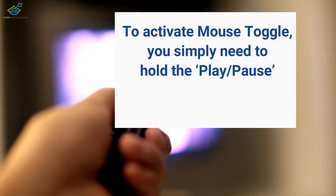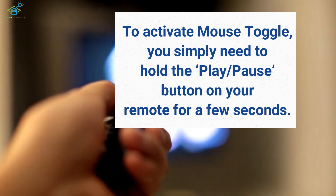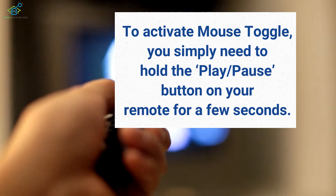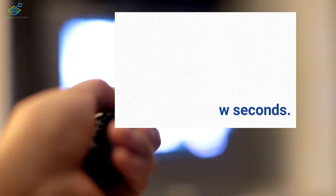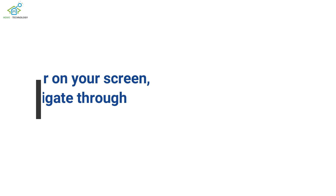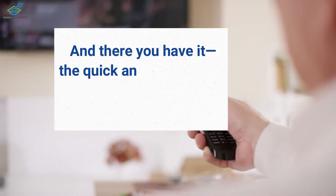To activate mouse toggle, you simply need to hold the Play/Pause button on your remote for a few seconds. You'll notice a cursor appear on your screen, making it super easy to navigate through those tricky apps.